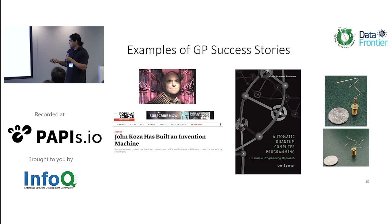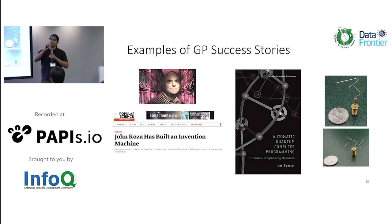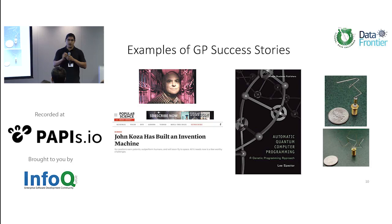In 2004, researchers at Carnegie Mellon University — Lohn and colleagues — evolved antennas for a NASA space technology mission. This was the first artificially evolved structure that went out into space. These designs are nothing like what a human engineer would produce, but they were actually much better antennas than the ones designed by NASA engineers. This was a cool example from the mid-2000s that gives you some ideas of what GP can do.